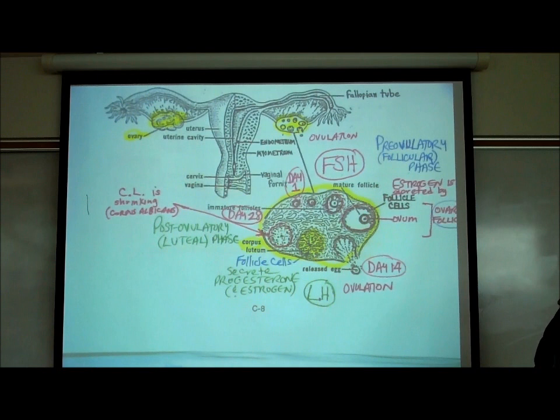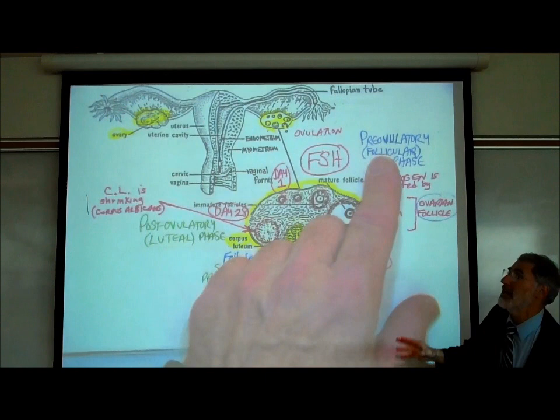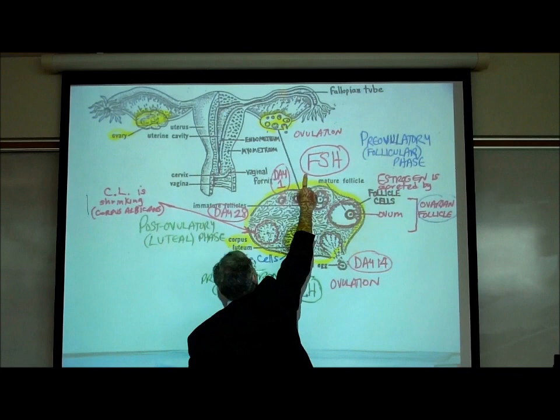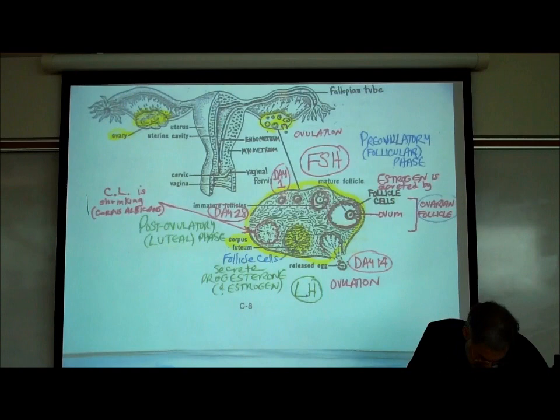During the first two weeks — the pre-ovulatory phase — a hormone from the pituitary gland called FSH is released. Let's look at page C11. FSH stands for Follicle Stimulating Hormone. It's secreted by the pituitary gland, the master endocrine gland of the body — more precisely from the adenohypophysis, or anterior lobe of the pituitary.